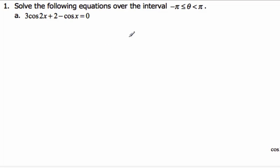For example, we're going to solve the following equation, and this is a negative pi to pi interval, so be careful where we're going to find it: 3 cosine 2x plus 2 minus cosine x.